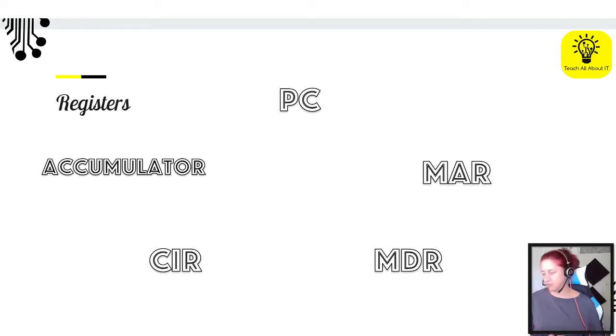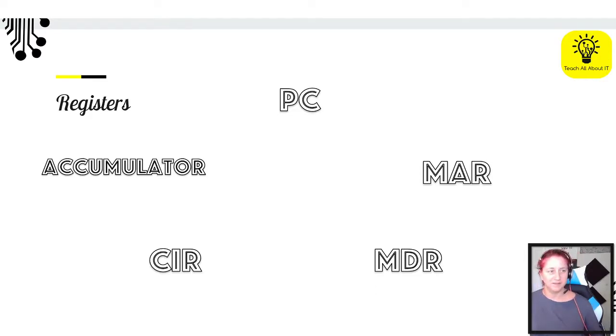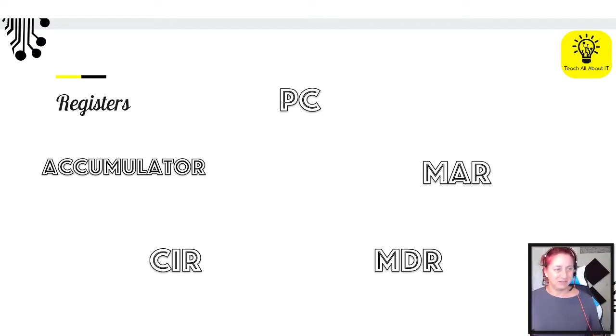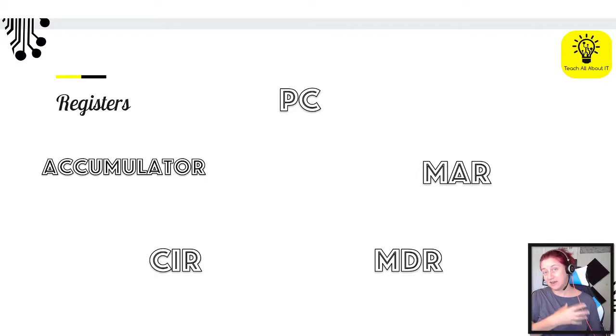We are going to do a little bit of annotation. Can you all give me a thumbs up to confirm that you have a pen and paper? What I'd like you to do is take what you can see here and write out the five different registers. We're going to explain how the fetch-decode-execute cycle actually happens using those registers. If you are in year 10, or year 9 and not doing OCR, this is something you really want to make sure you've got to grips with.